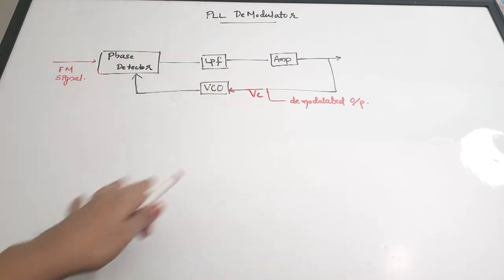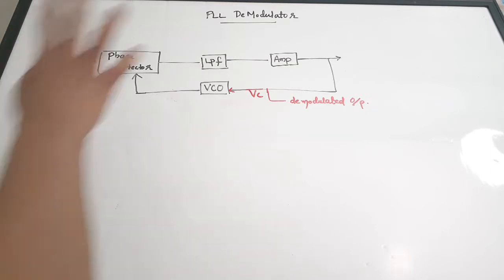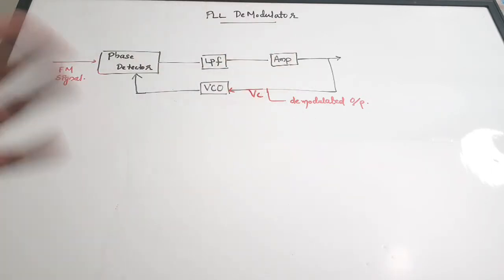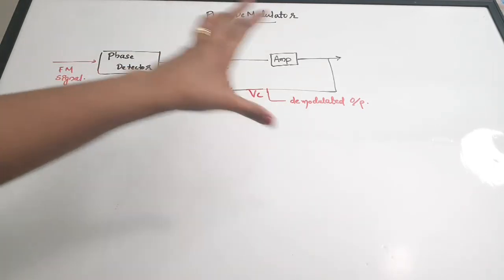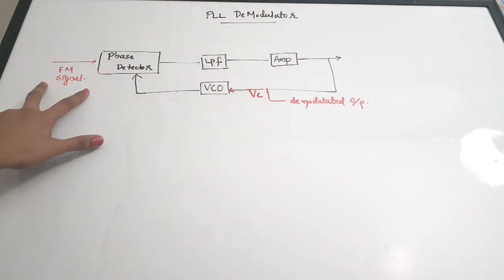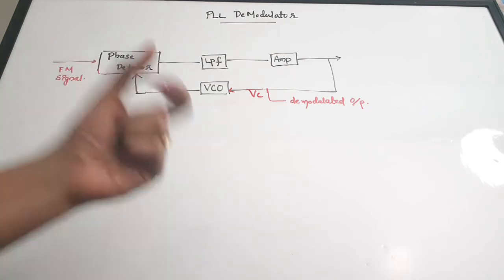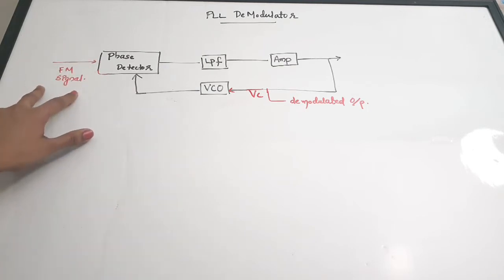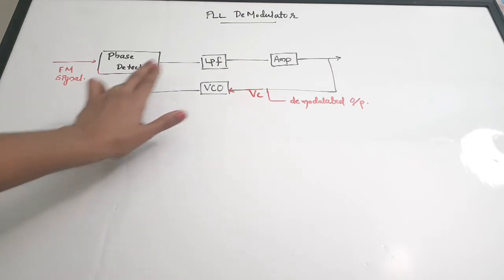Let us see the basic structure and working of this PLL demodulator. We have already studied PLL — Phase-Locked Loop — in earlier subjects, and we are going to use it for recovery of our modulating signal from an FM modulated wave. The input is an FM signal, and the basic blocks present are: a phase detector, a low pass filter, an error amplifier, and a voltage controlled oscillator.